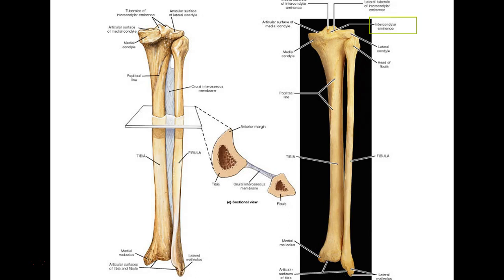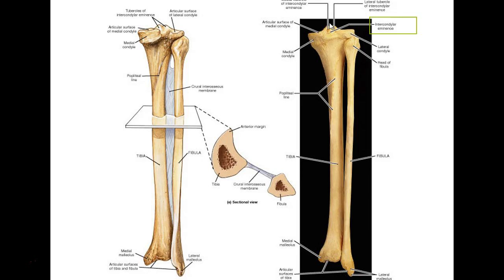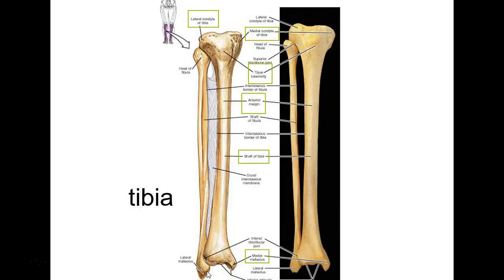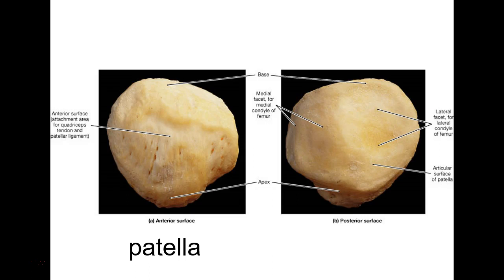The tibia and fibula have an interosseous membrane between them, just like the radius and ulna. That membrane stress causes sharp knife-edge lines on the bone. One landmark I left out on the tibia is the intercondylar eminence — that little projection poking up between the condyles that fits up into the intercondylar fossa of the femur.